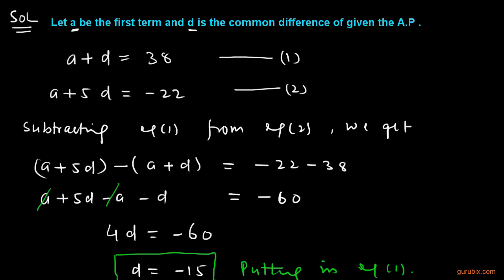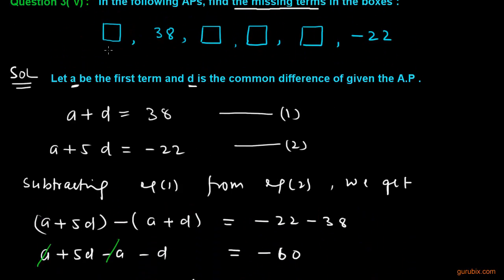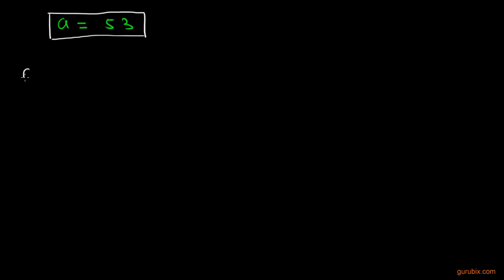Now we can get all the desired terms. We have already got the first term and now we shall find out the third term, fourth term, and fifth term. To get the third term, we know that the third term can be written as a plus 2d. The value of a is 53 plus 2 multiplied by the common difference, that is minus 15. We get 53 minus 30. This means 23.